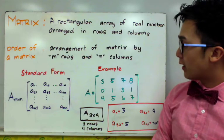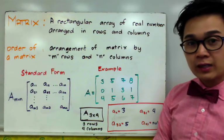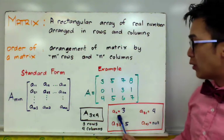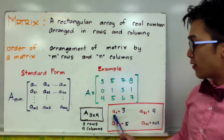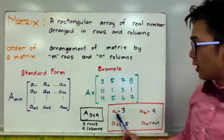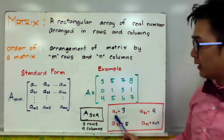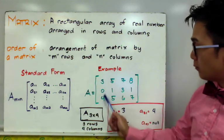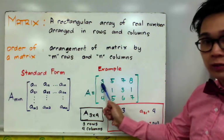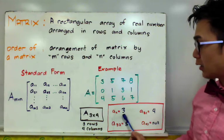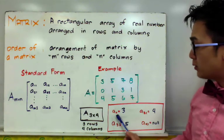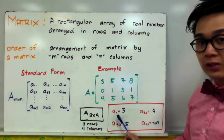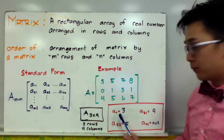To find a specific entry in this 3 by 4 matrix, we use subscript notation. For example, entry A sub 1 1 means row 1, column 1, which gives us 3. So A sub 1 1 is equal to 3. The subscript is our way of locating a specific entry in a given m by n matrix.